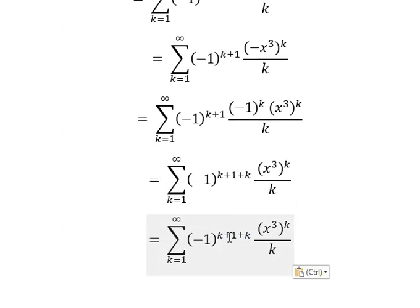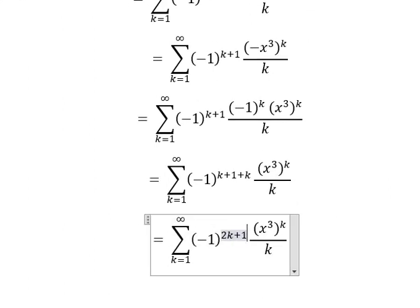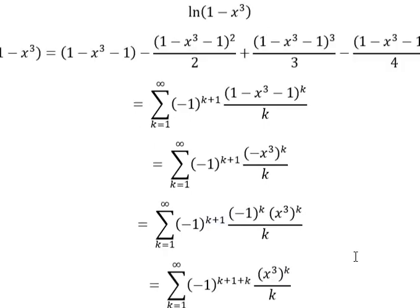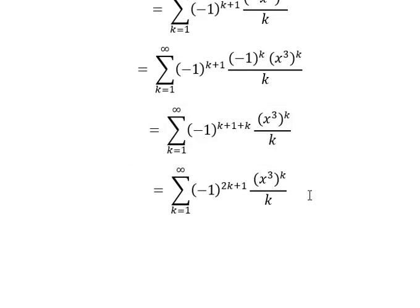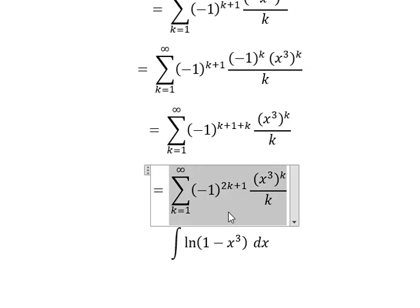So this one combines with this one, so k plus k, we have 2k.